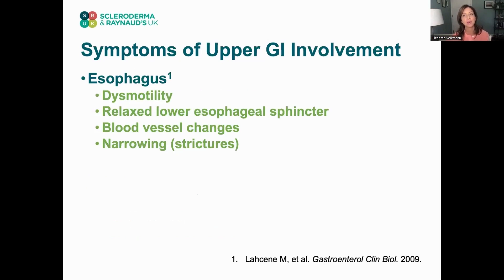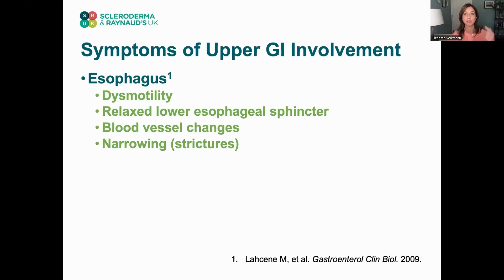The esophagus is something that really affects the majority of patients. As I mentioned, up to 90% of patients will have involvement. What happens is there's dysmotility of the esophagus — the muscle that helps to contract and move food down through the esophagus does not work properly. We also see changes in the lower esophageal sphincter, which is normally closed and opens when you eat so that food can pass through the esophagus into the stomach.